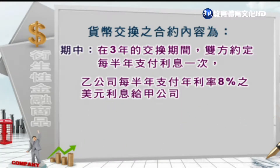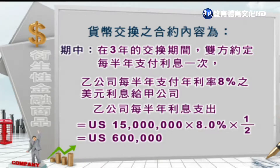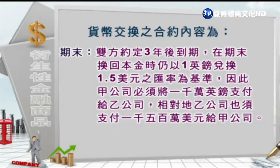乙公司每半年支付年利率8%的美元利息给甲公司，因为乙公司使用的是美元，所以要支付美元的利息。乙公司每半年的利息支出等于美金1500万乘上8%的利息，再乘上半年的二分之一，所以等于60万美金。最后在期末的时候，双方约定三年后到期，换回本金时使用与三年前相同的汇率——1英镑对1.5美元，因此甲公司把1000万英镑支付给乙公司，乙公司支付1500万美元给甲公司。